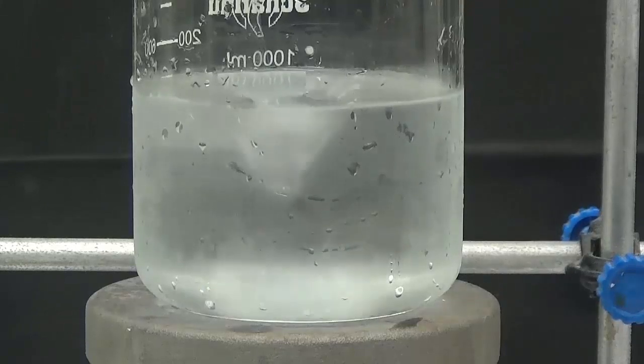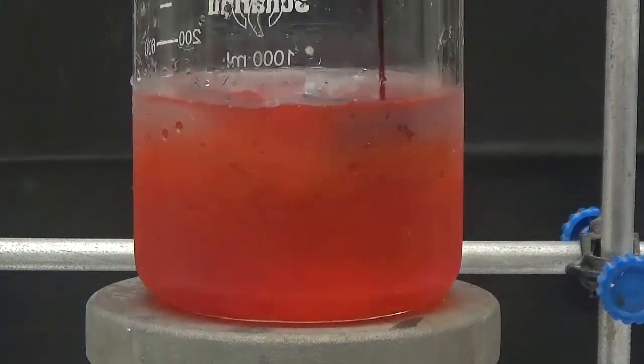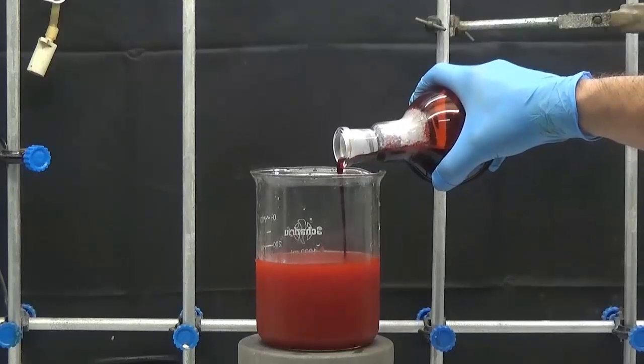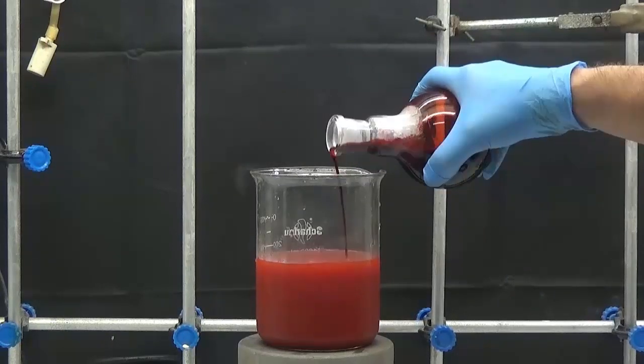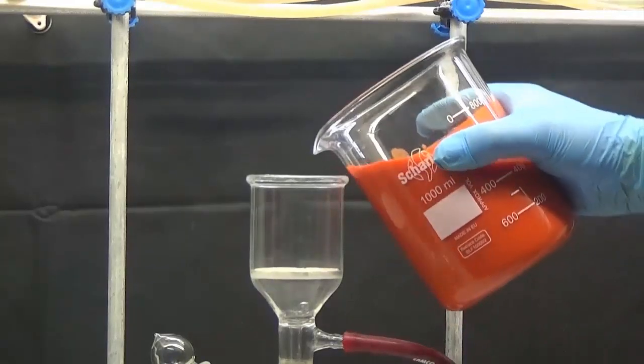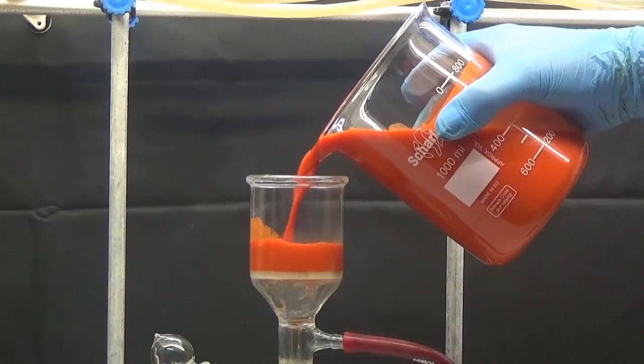Let cool and pour the reaction crude into 500 ml of ice water with heavy stirring. Collect the red solid by vacuum aspiration.